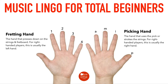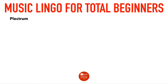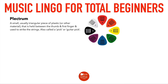The next term is 'plectrum,' which I don't ever really hear anybody say. It is a small, usually triangular piece of plastic or other material — sometimes metal or wood — held between the thumb and first finger and used to strike the strings. It's also called a pick or guitar pick. If you ever see the word plectrum, now you know it just means a guitar pick.